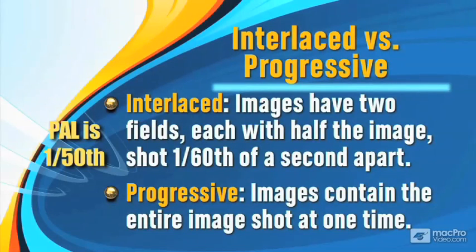Progressive images contain the entire image shot at one time. Film, for instance, is a classic example of a progressive image. The entire frame is shot all at once.